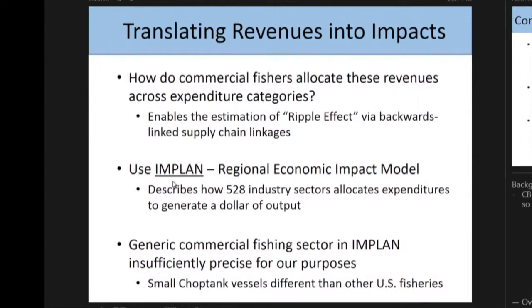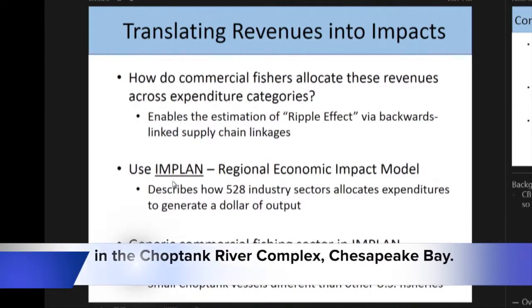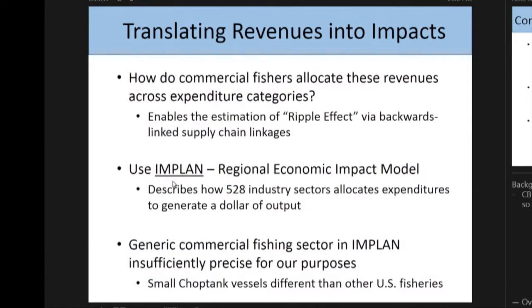Translating revenues into impacts requires understanding how commercial fishers allocate revenues across different expenditure categories — that's really the key. We use a specialized model called IMPLAN to do that, with all these industry linkages relating how each industry engages with others. There is a generic commercial fishing industry among IMPLAN's 528 industries, but it was judged insufficient for our purposes. The uniqueness of the Choptank River trotline fishery is not well captured by the generic fishery, which accounts for offshore long lines, sword fishing, and large vessel open-ocean fishing.